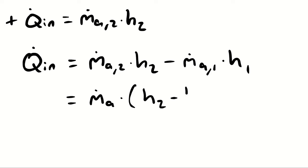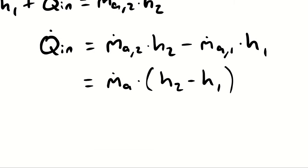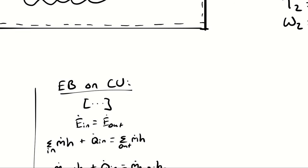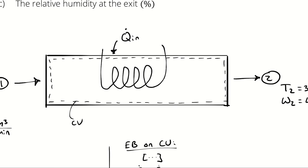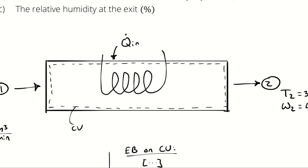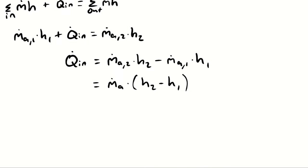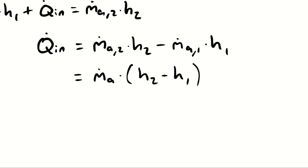Quick question: we have a heating process of air — can we just plug in cp of air times (T2 minus T1), like we did in thermodynamics one? We can't, because we have to account for how much energy it takes to increase the temperature of the water as well. Even though there's not much water, it has a higher heat capacity, so we cannot neglect that energy increase. That's the whole reason we are modeling this as atmospheric air instead of just dry air.